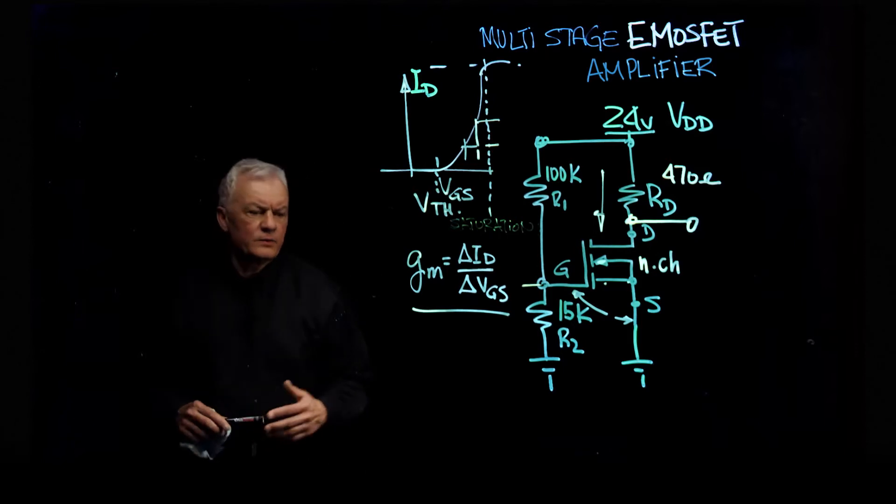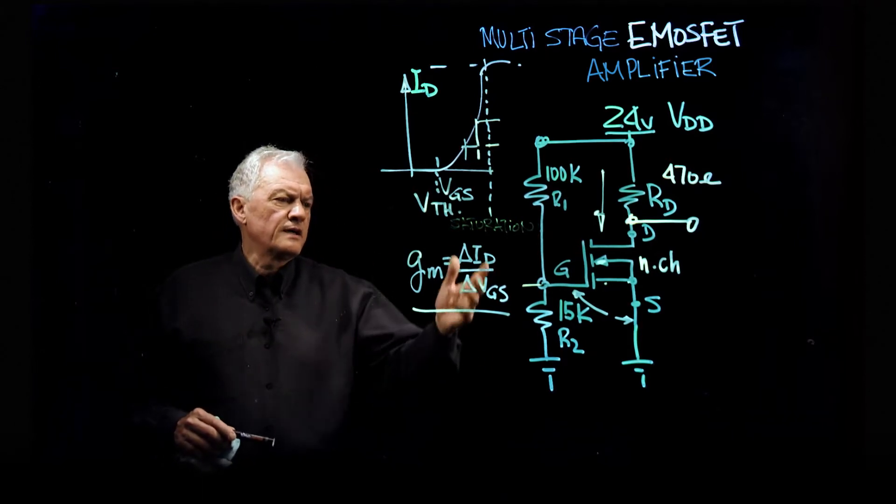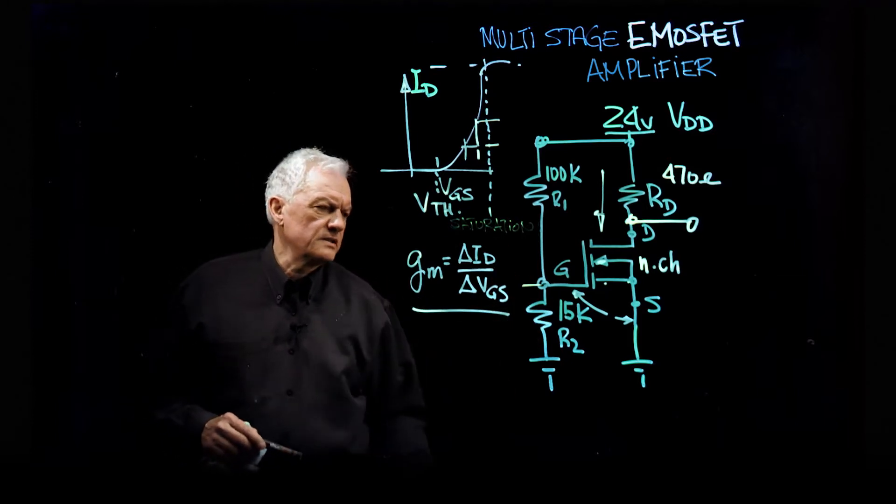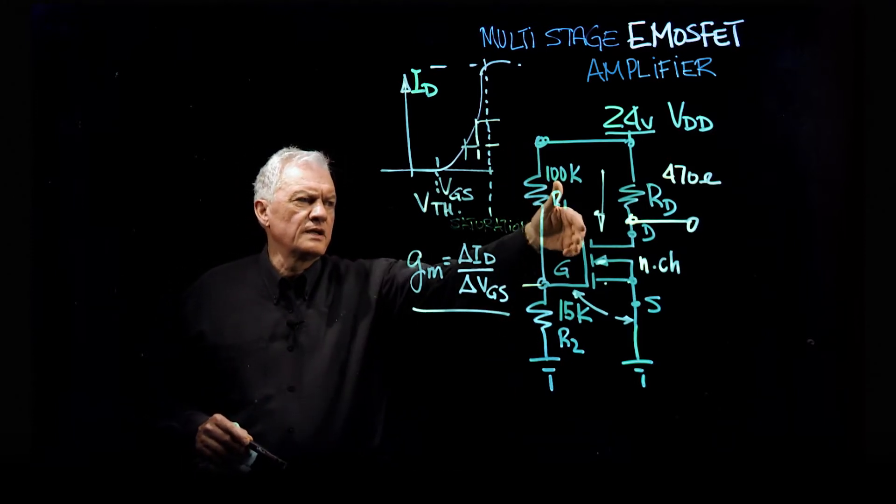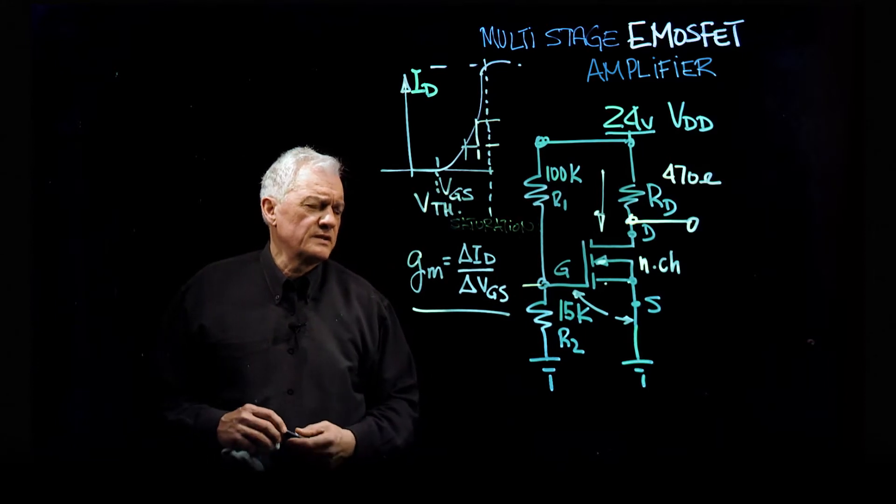Okay, thanks. So we calculated our gate source voltage with the resistor divider and such, we calculated our drain current and therefore our voltage drop across the RD.